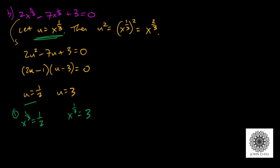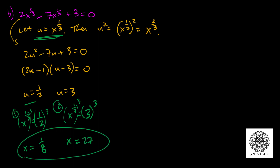For the first equation, I cube both sides: x to the 1/3, cubed, becomes x; and 1/2 cubed is 1/2 times 1/2 times 1/2, which gives 1/8. For the second equation, cubing both sides gives x to the 1/3 cubed equals x, and 3 cubed is 3 times 3 times 3, which is 27. So my solutions, written as a solution set, are 1/8 and 27.